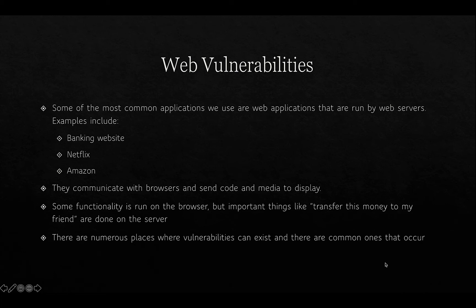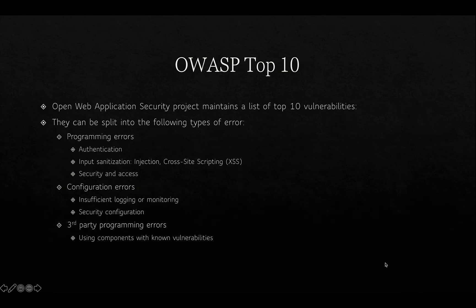There are numerous places where vulnerabilities can exist, and there are common ones that occur and still occur repeatedly. This is where OWASP comes in — the Open Web Application Security Project — which maintains a list of the top 10 vulnerabilities. It's not suggesting those are the only vulnerabilities to care about, but it focuses developers' and organizations' efforts on the most commonly exploited ones. They start with errors introduced by programmers, including authentication errors such as not authenticating access to administrative controls on a web application.